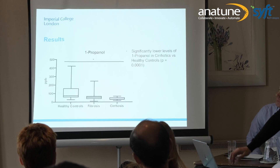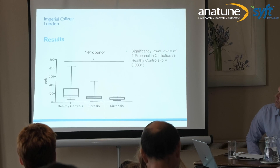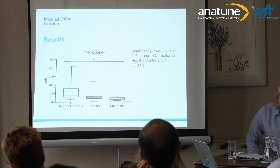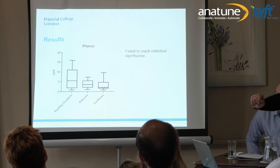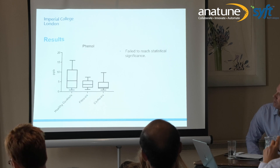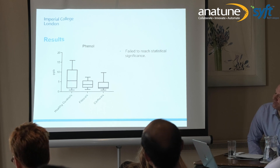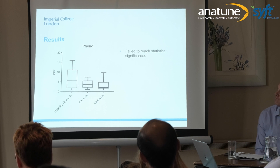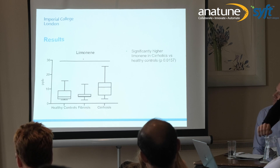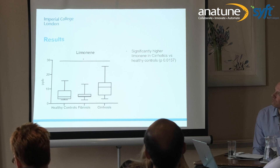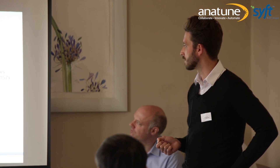In terms of what we found: 1-propanol was an interesting compound — there's a nice trend where it's much lower in patients with cirrhosis compared to healthy controls, and that did reach statistical significance. With phenol we also saw a downward trend, but unfortunately that didn't reach statistical significance — it showed a general trend downward. Limonene showed an increased level in patients with cirrhosis compared to healthy controls, which also reached statistical significance.